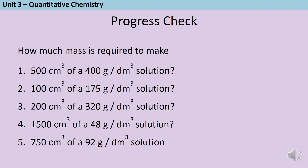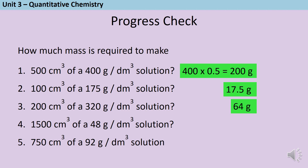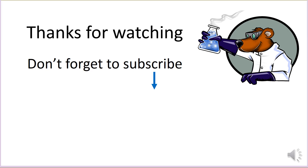How much mass is required to make each of these solutions? Pause the video and write down your answers. To make 500 cm³ of a 200 g/dm³ solution, we need to do 400 multiplied by 0.5 because the volume needs to be in decimetres cubed, giving 200 grams. For question two, the answer is 17.5 grams. Question three: 64 grams. Question four: 72 grams. And question five: 69 grams.